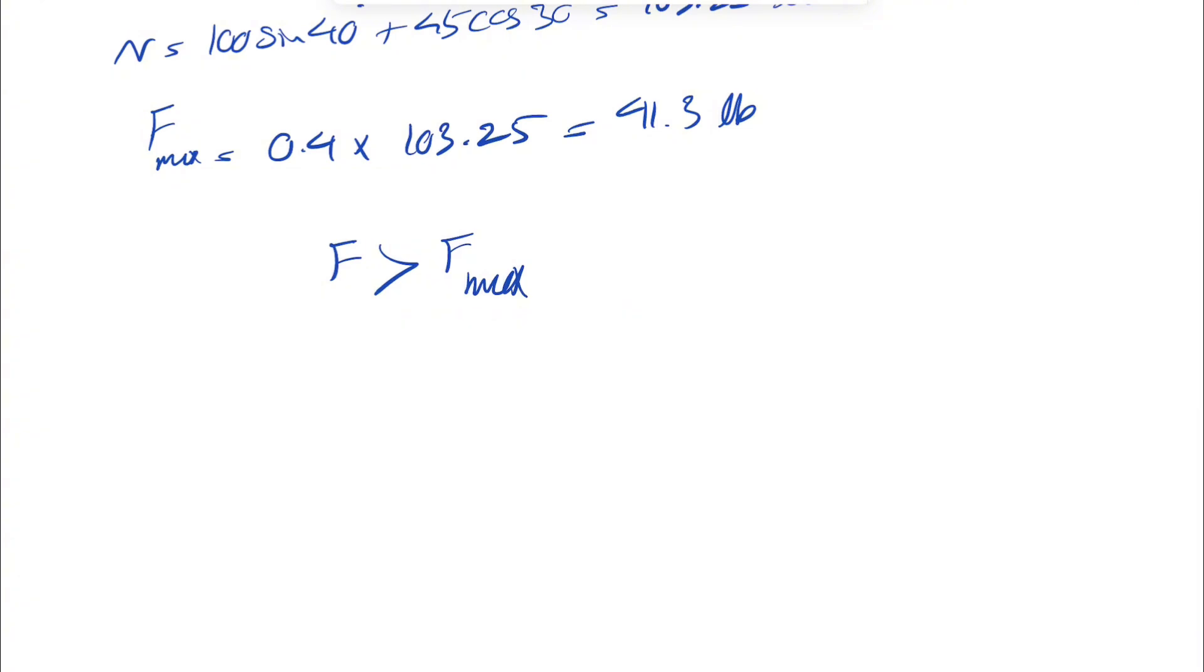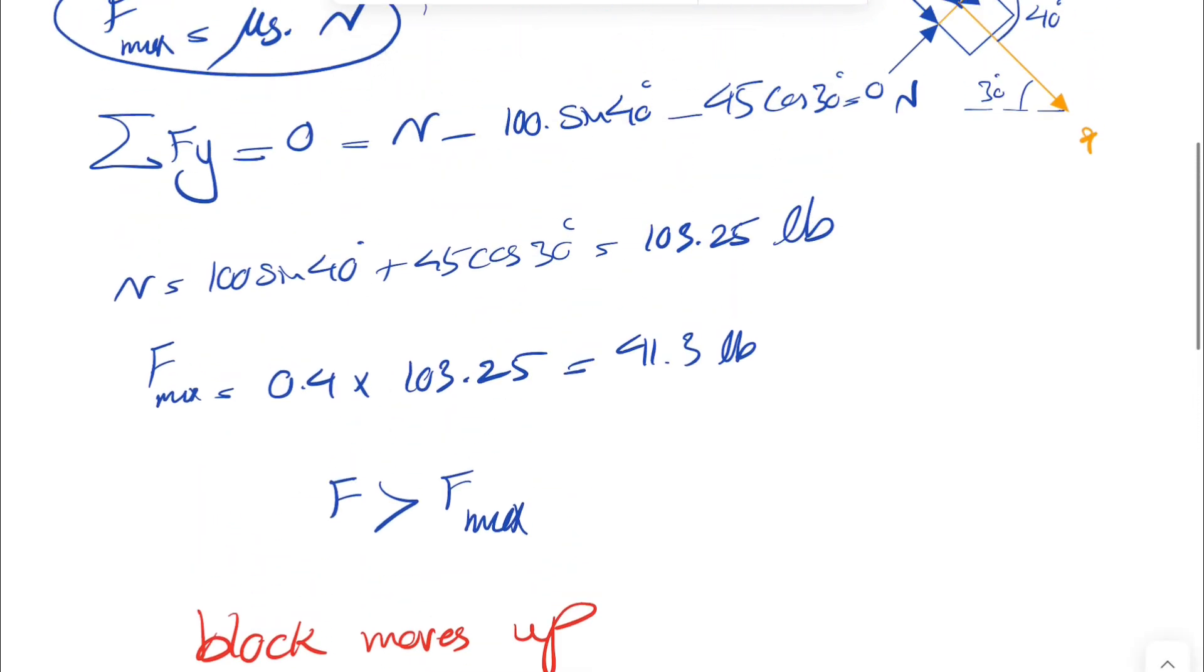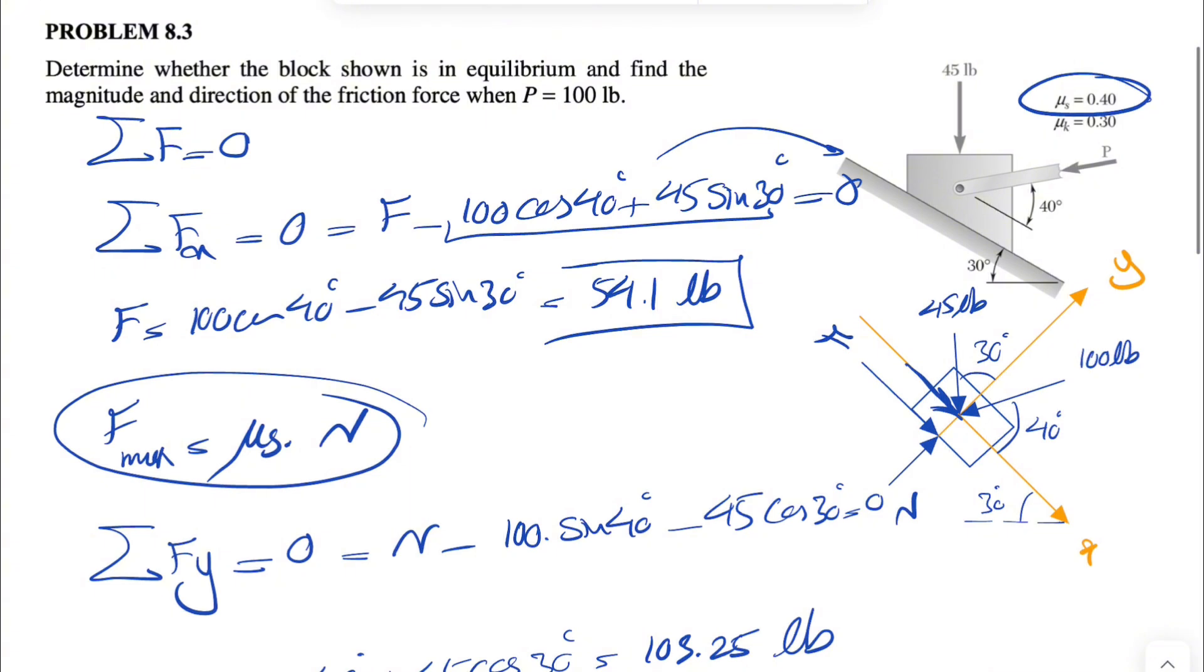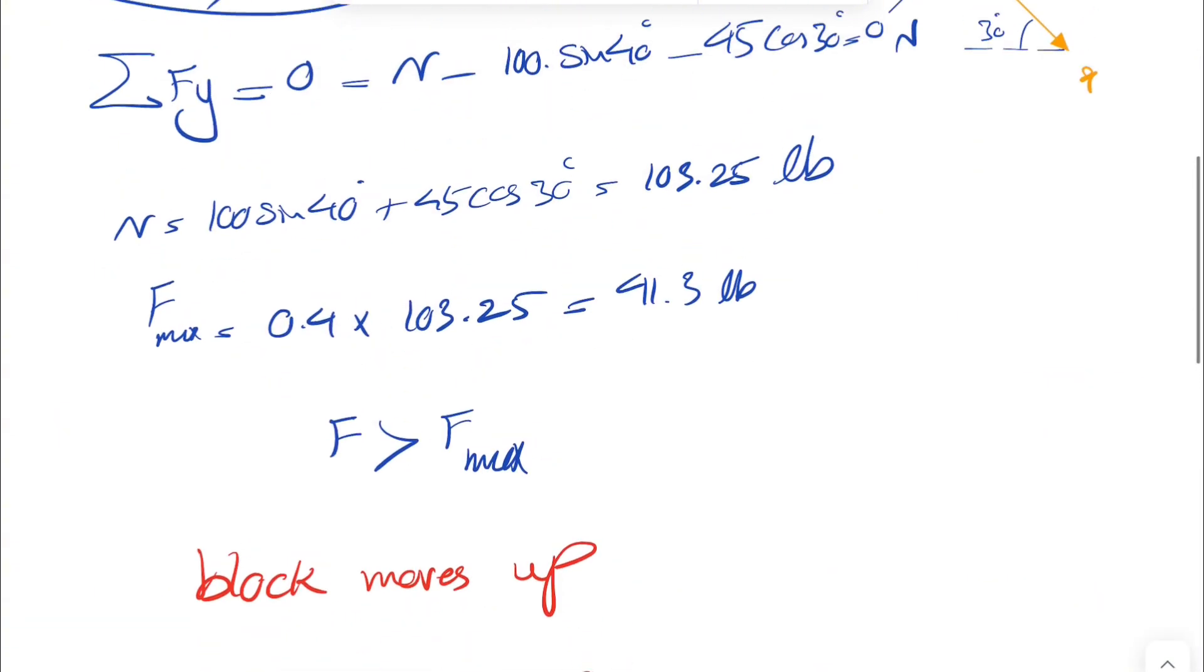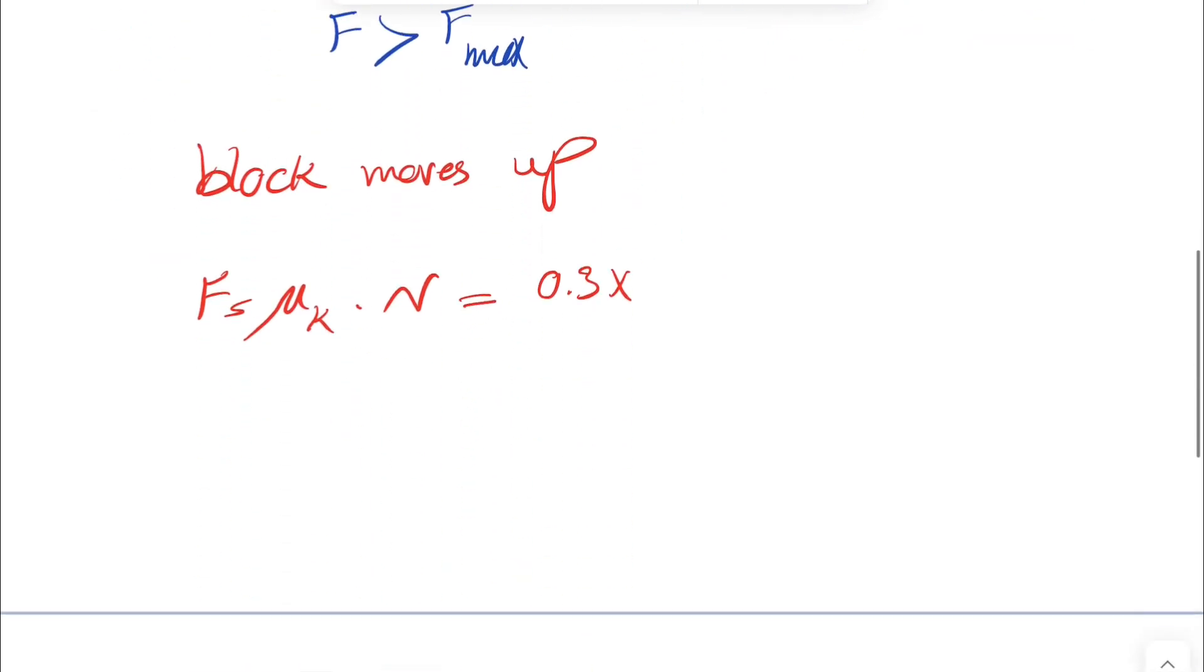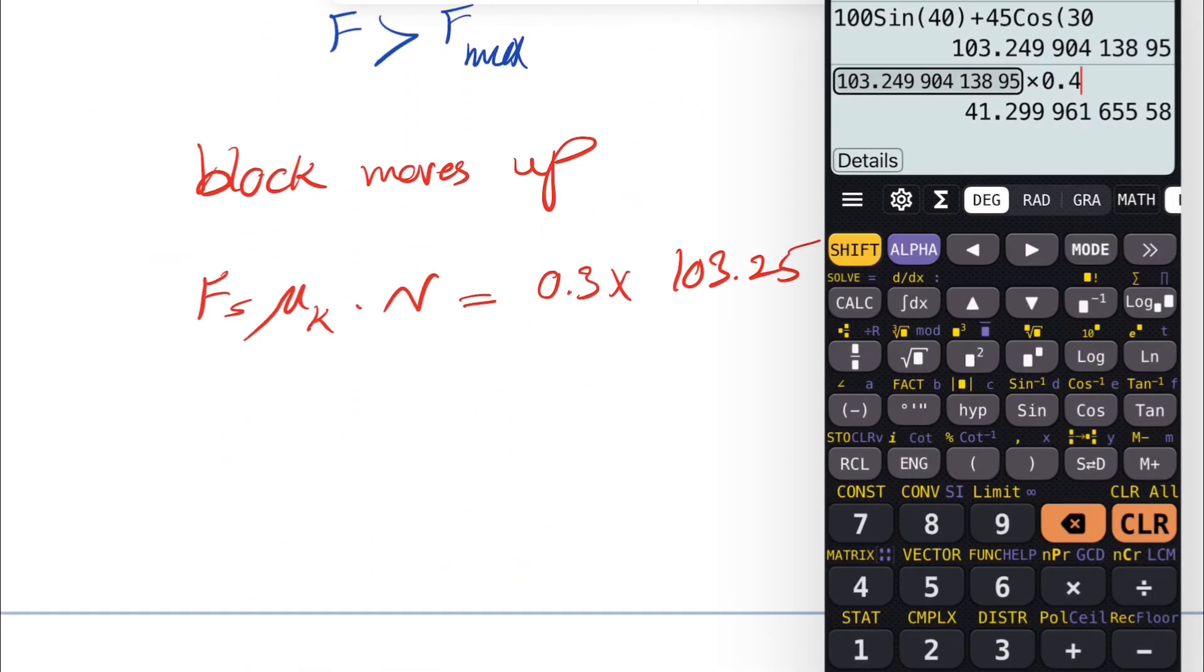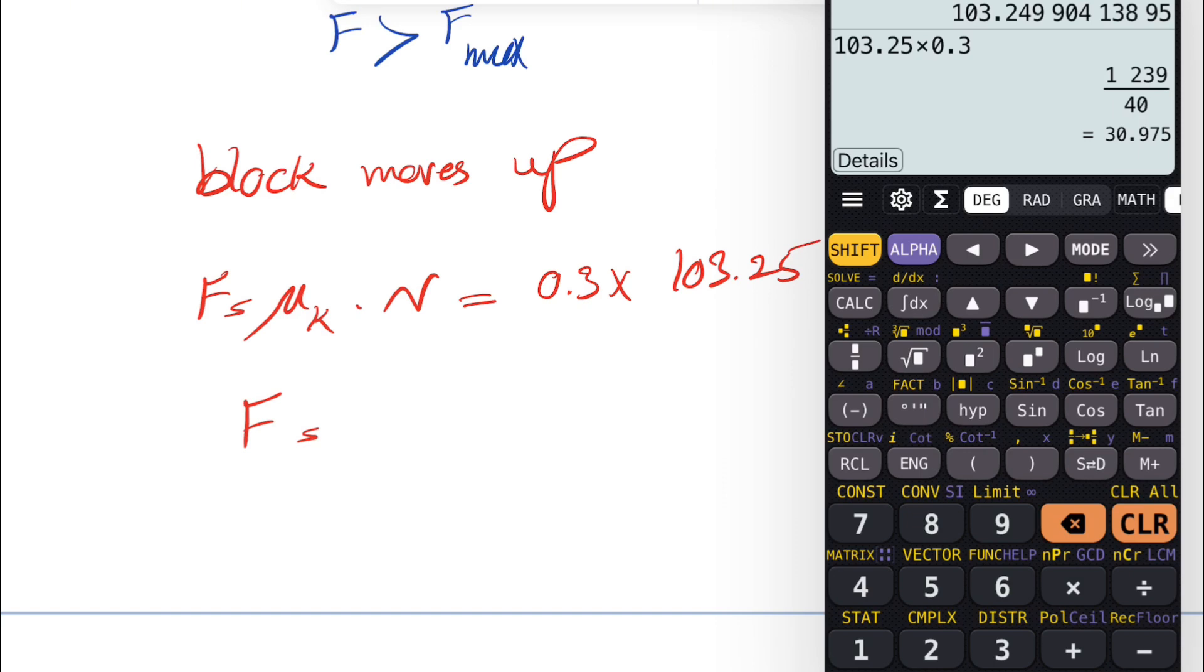So that shows that our block moves up the hill. And if that's the case, as our friction now would be different, we're going to have kinetic coefficients times our normal force. We have kinetic coefficient 0.3 times our N would be the same, the normal force that we found in here, 103.25. Let's see what we get. So our friction would be actually 30.98 pounds.